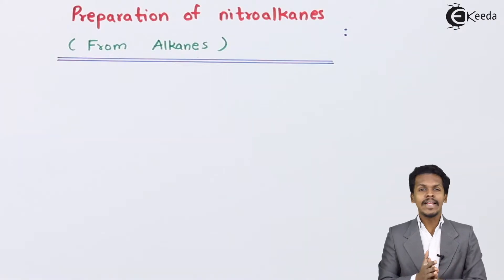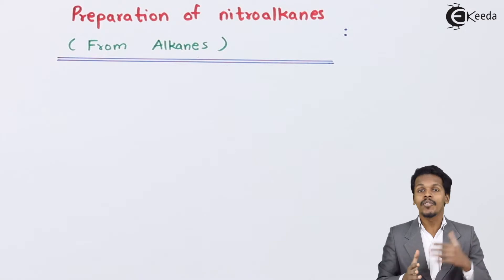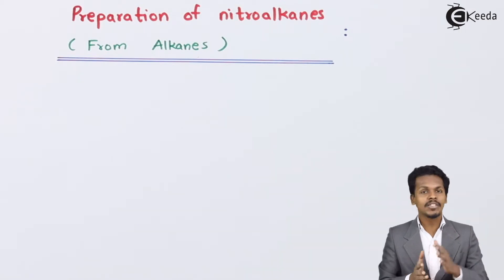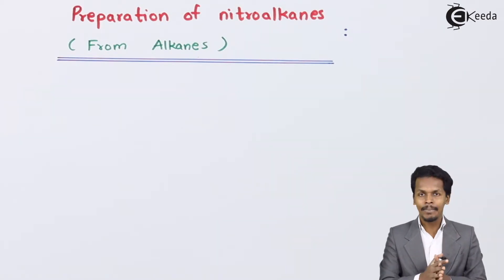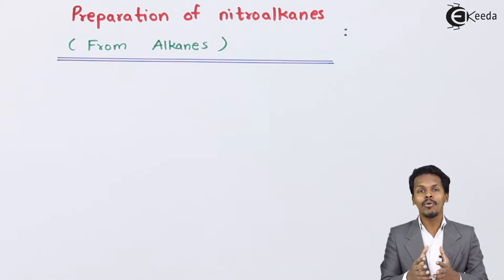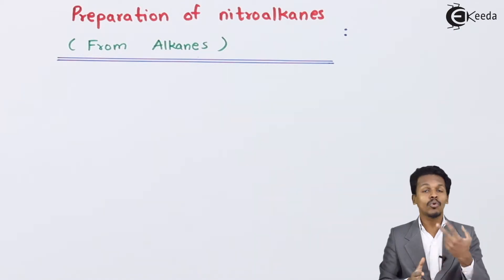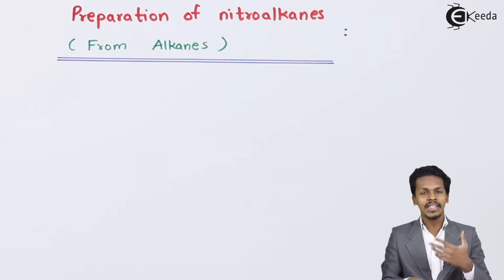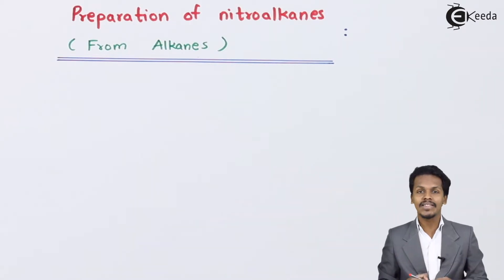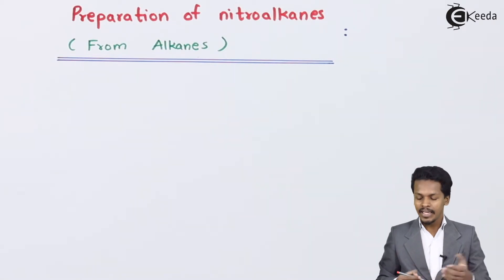So friends, nitroalkanes can be easily prepared from alkane by doing direct nitration on the alkane. There are two ways for the nitration of alkane, so let me talk about the first method, that is vapor phase nitration.